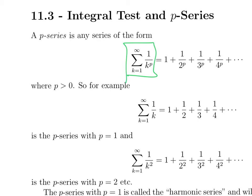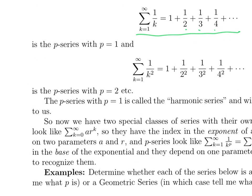So when p equals 1, you get this series: 1 plus a half plus a third plus a fourth and so on. And when p equals 2, you get 1 plus a half squared plus a third squared plus a fourth squared and so on.